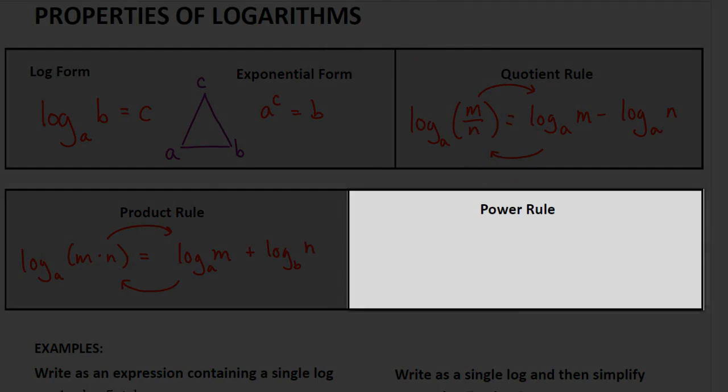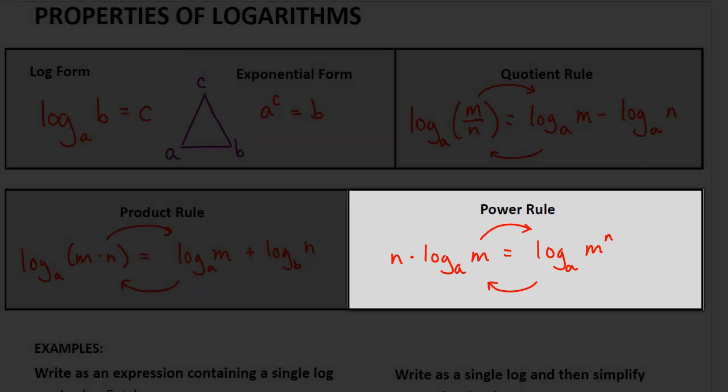Now, let's look at our last rule, the power rule. It tells us if we have a number in front of a log — we'll use the letter n to represent a number in front of a logarithm — that number is an exponent for our value. So, log base a of m: the n would be the exponent for the m. And again, if we have an exponent already being applied to a value, we could put that exponent in front of the logarithm. So, this rule works in both directions.